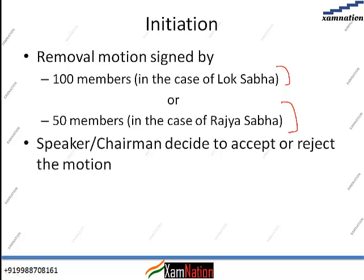The next step is that the Speaker or Chairman decides to accept or reject the motion. For example, the recent impeachment motion was introduced in the Rajya Sabha, so the chairman of the upper house — that is, the Vice President, who is the ex-officio chairman of the upper house, Mr. Venkaiah Naidu — would accept or reject the motion. If introduced in the Lok Sabha, the Speaker decides; if in the Rajya Sabha, the Chairman decides.